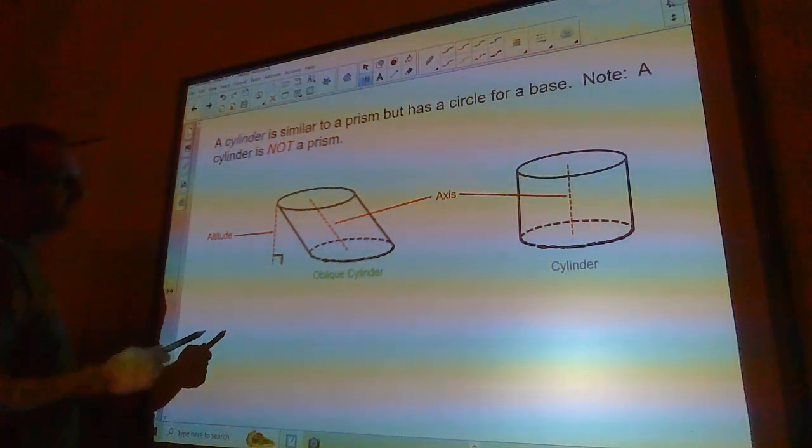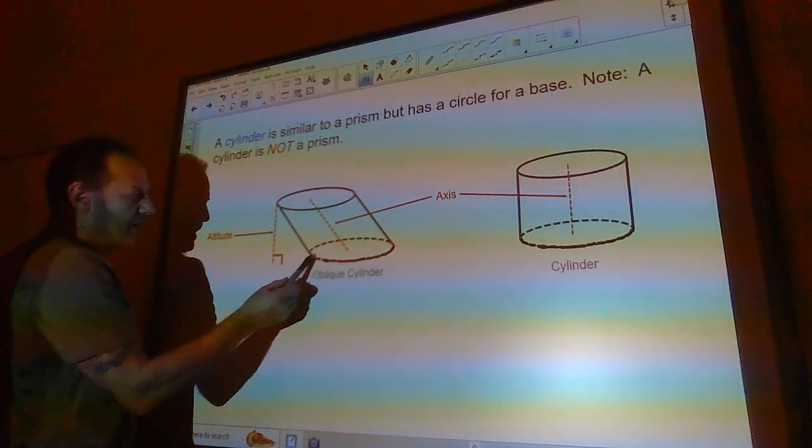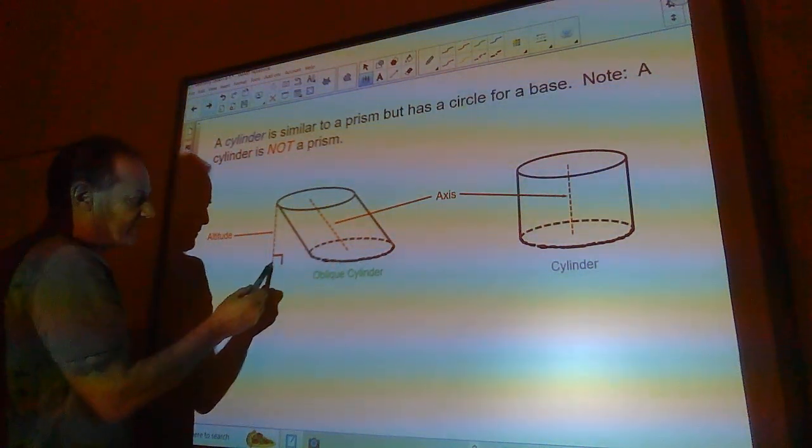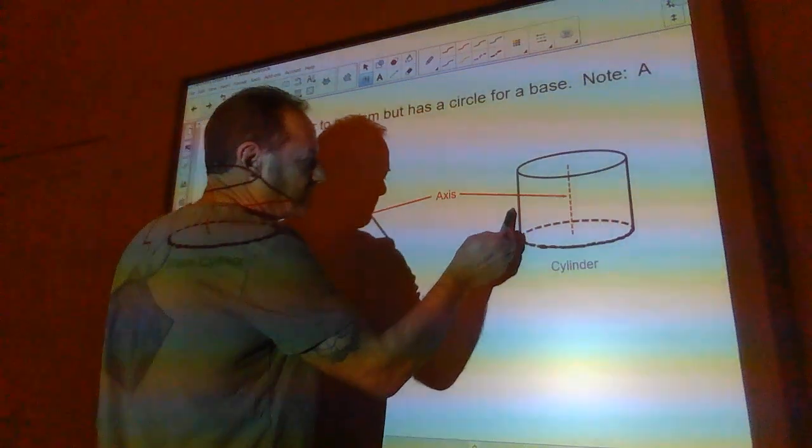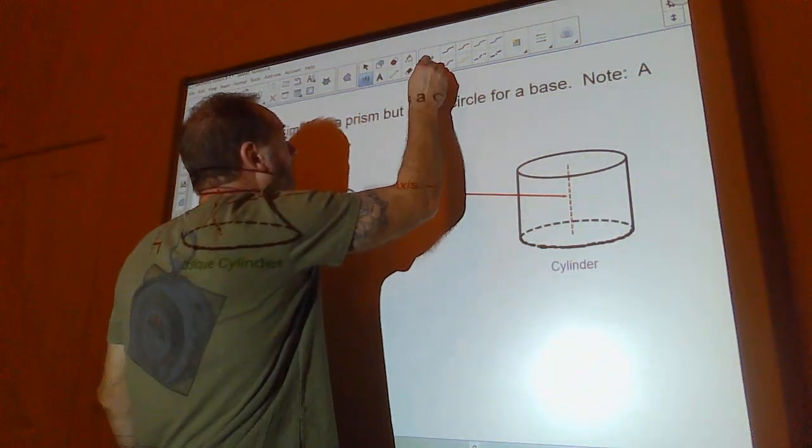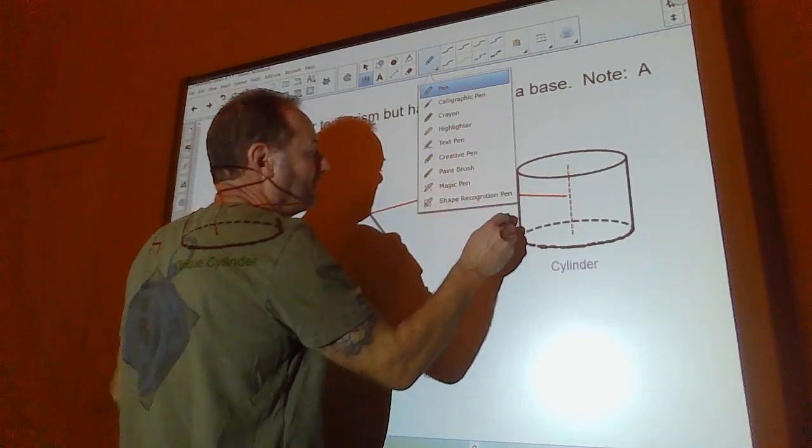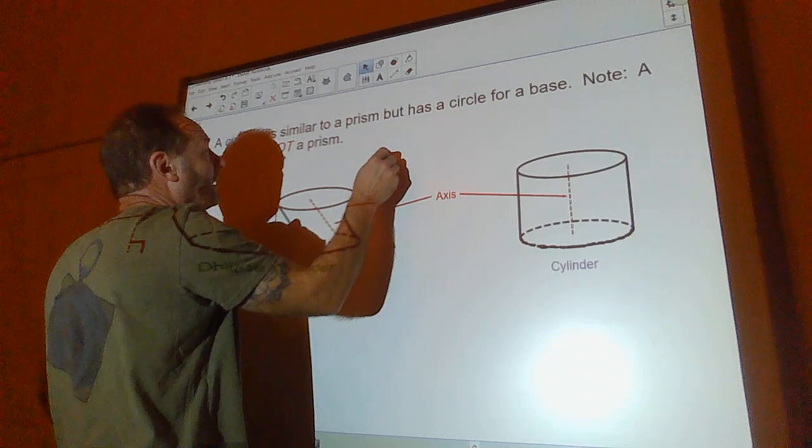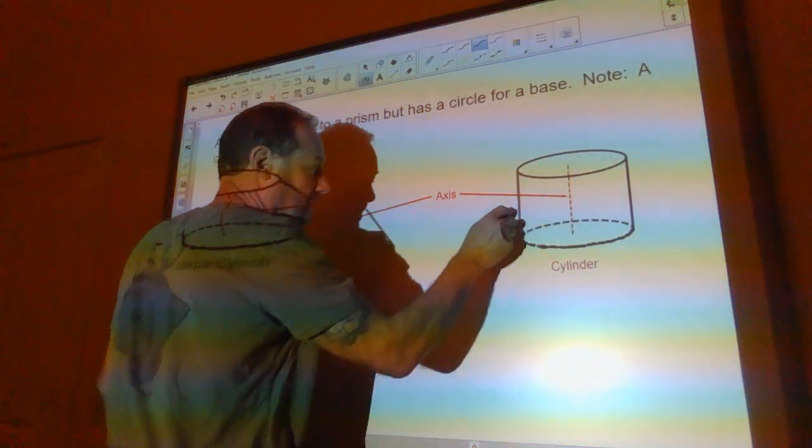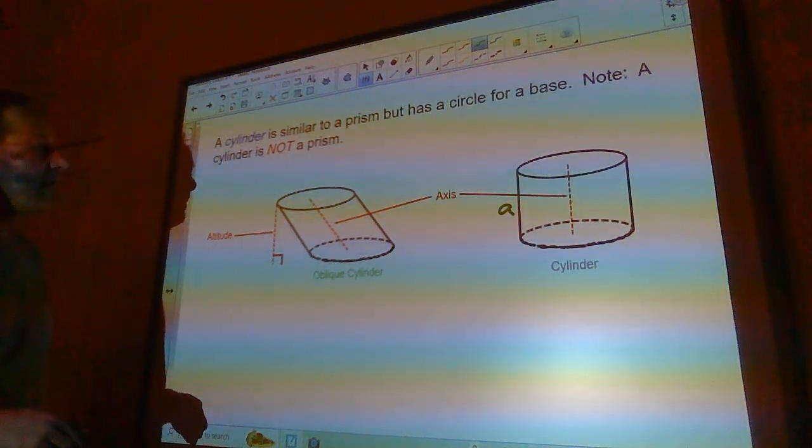And the altitude is the distance between the two circles. So the altitude here would be out here. The altitude here would just be the side. I'm not sure why my pen isn't working. There we go. There's an altitude.